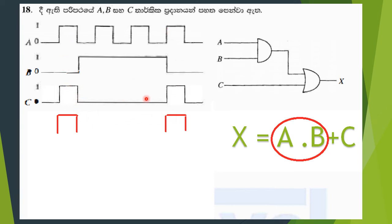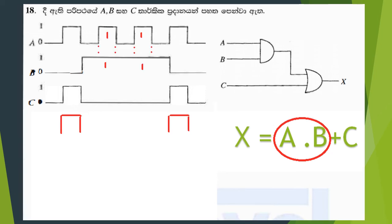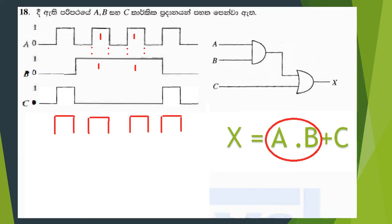So you can get the output. The output is a small value. Now you have the output, and the output is the same.